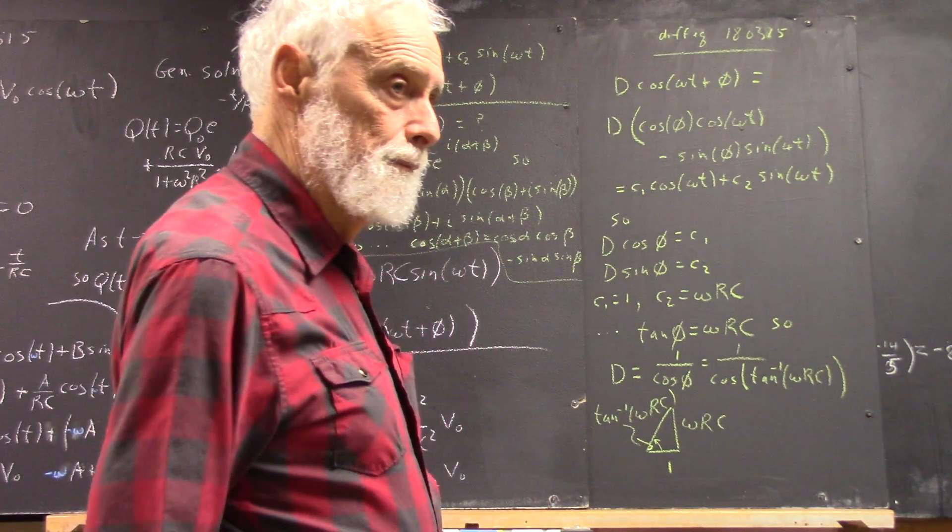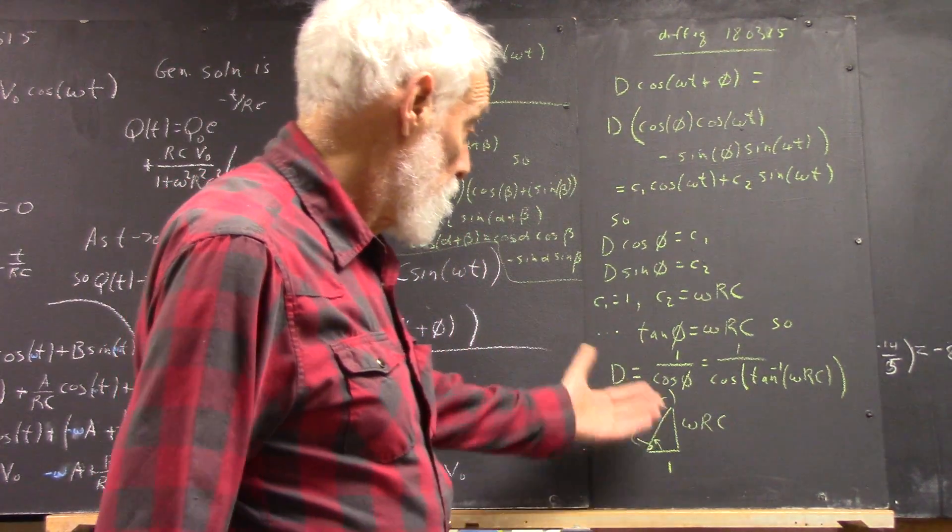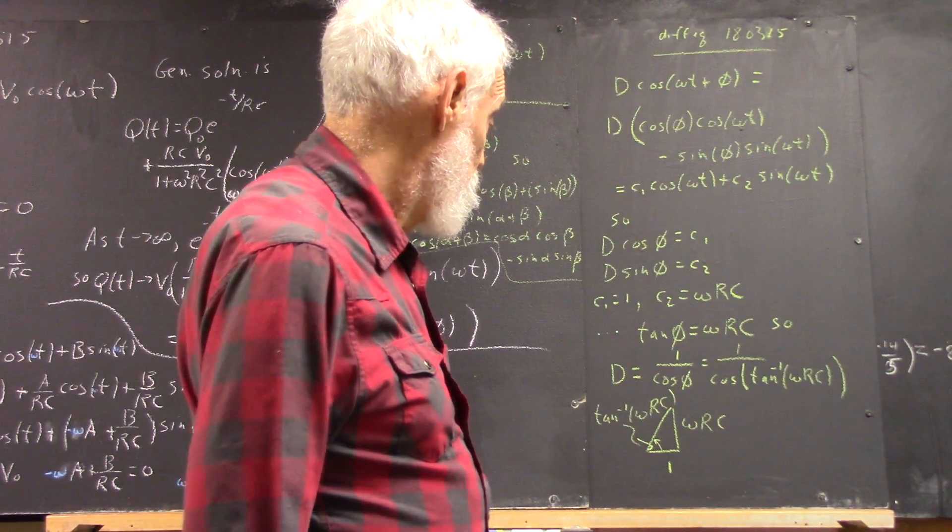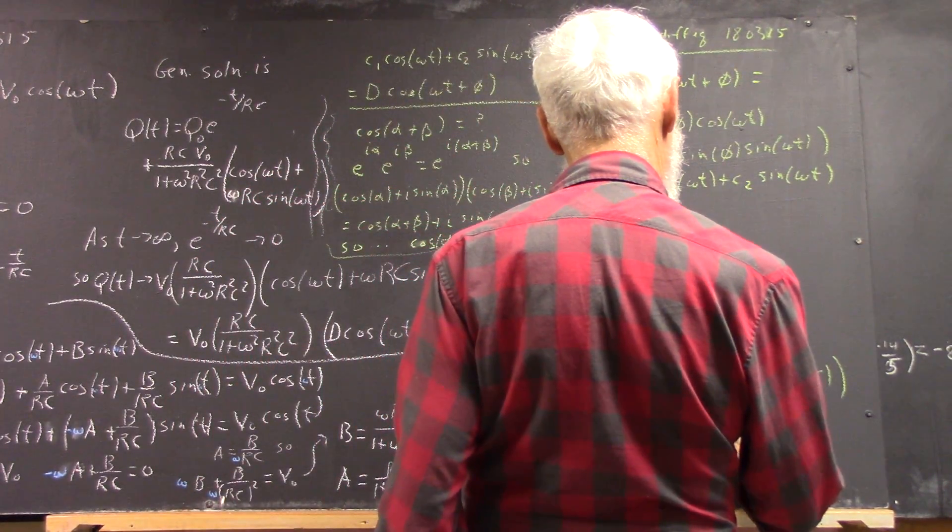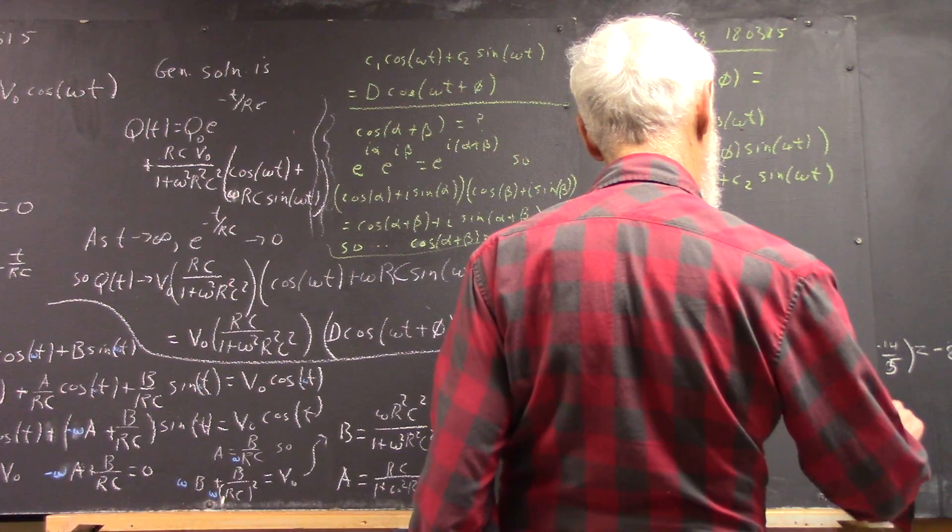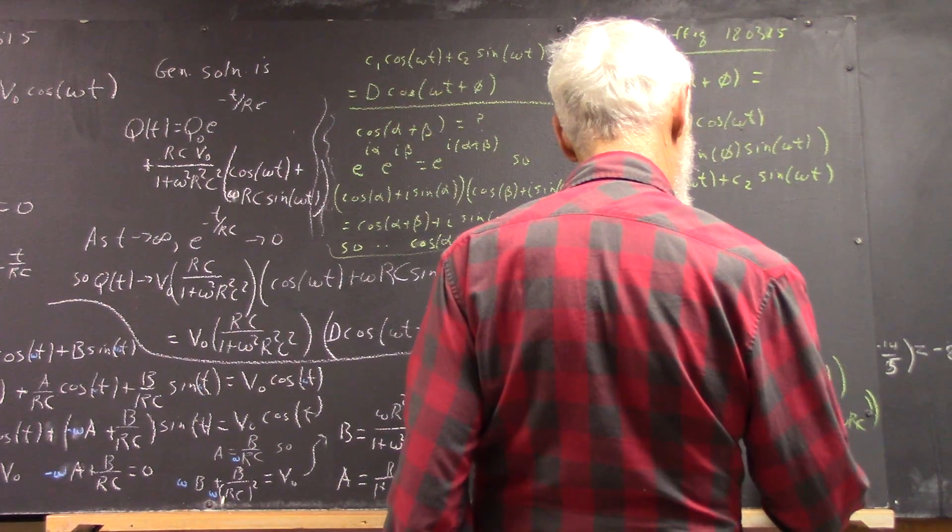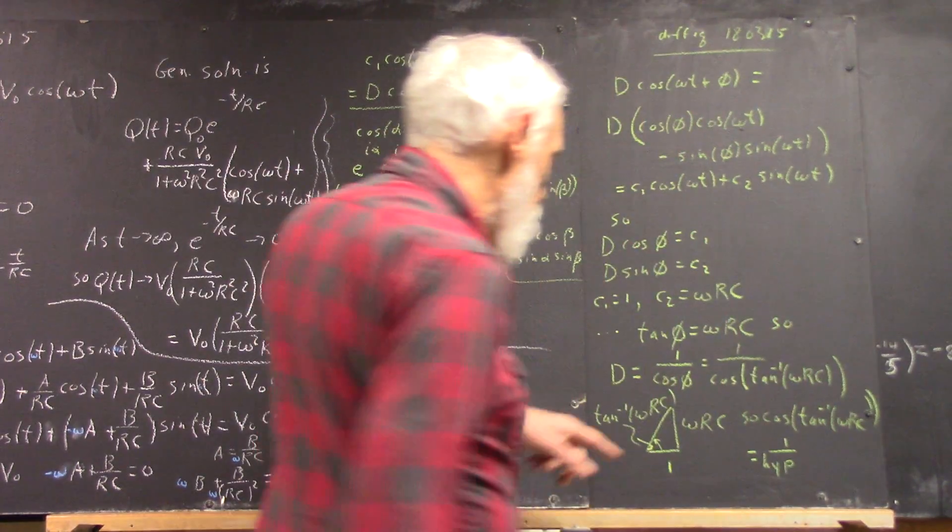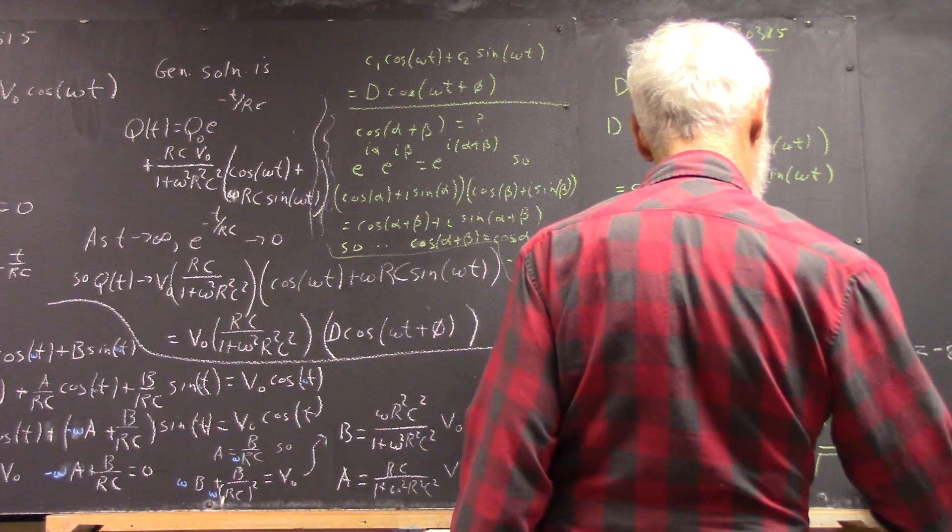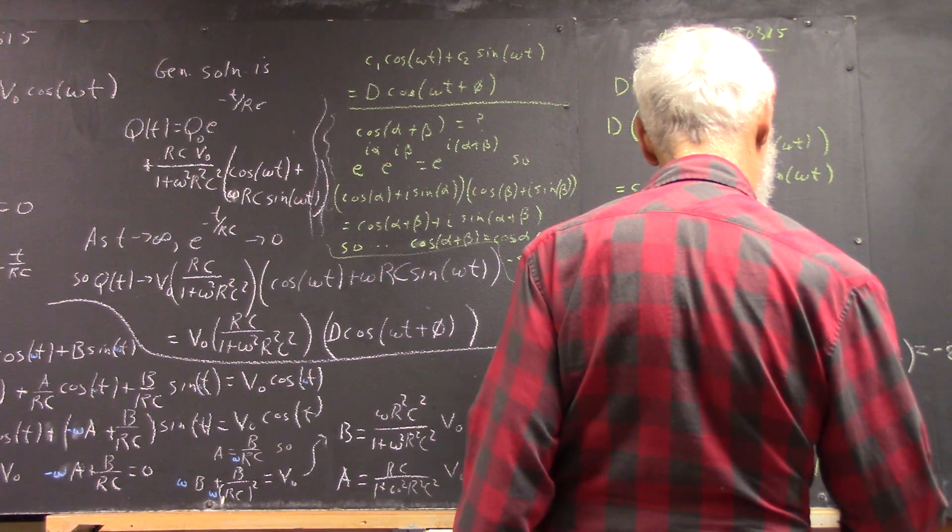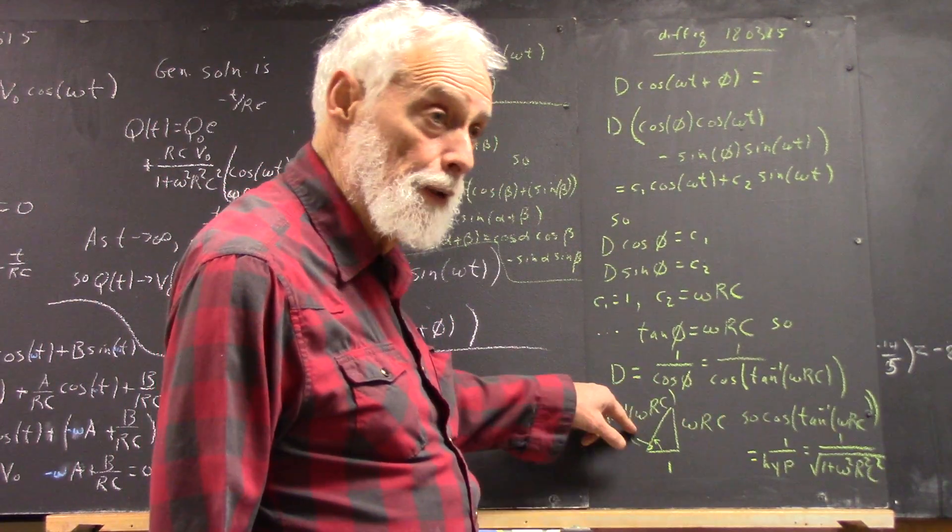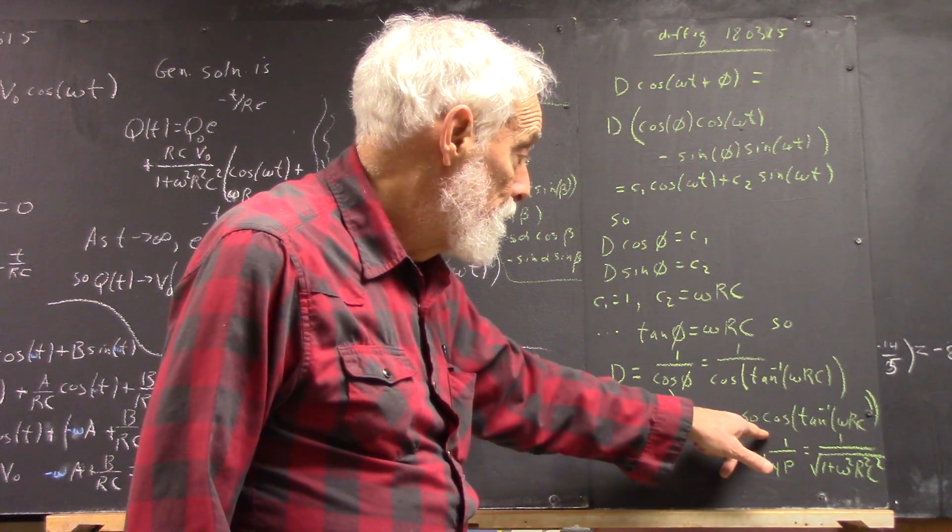It'd be the cosine of 1, right? No. What's the cosine of an angle? It's the adjacent side over the hypotenuse, right. So it's 1 over the hypotenuse of this triangle. The hypotenuse of the triangle is the square root of the sum of the squares of the sides, obviously.